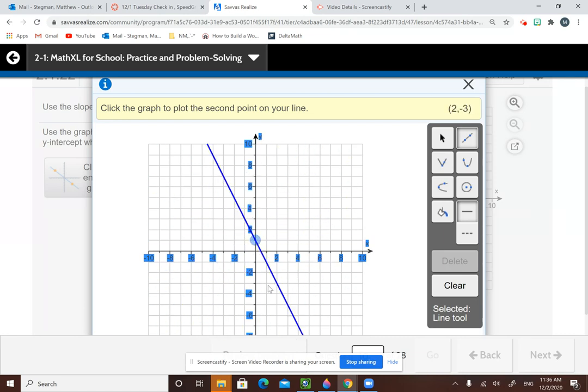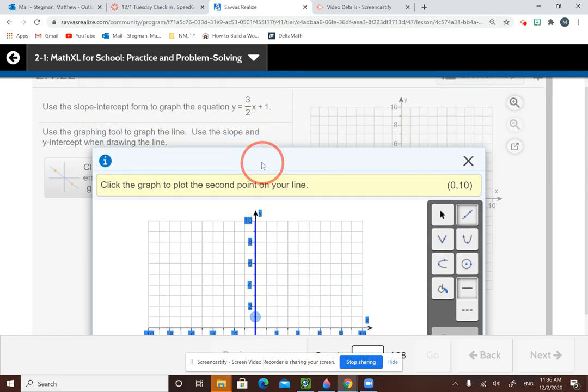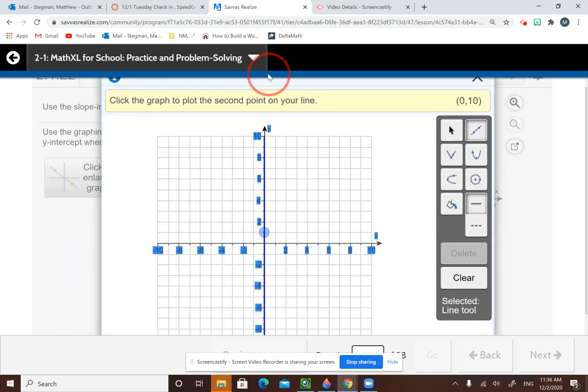Now you can see here it wants us to put another point somewhere. So now we need to find the slope. The slope is the number in front of x, which is 3 over 2.